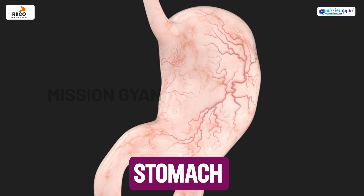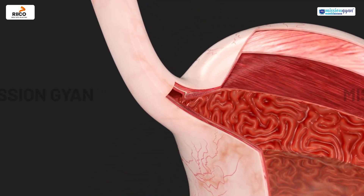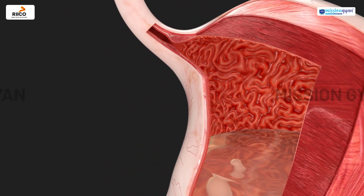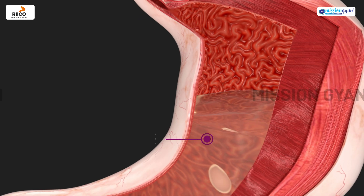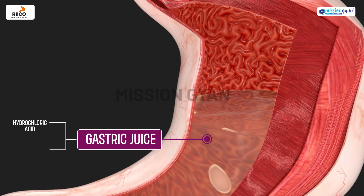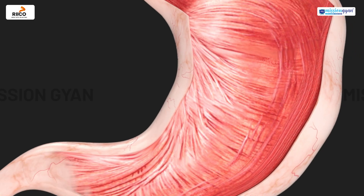The stomach is a J-shaped muscular sac that churns the food and mixes it with gastric juices. These juices contain hydrochloric acid and an enzyme called pepsin which begins protein digestion.